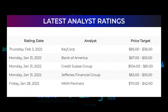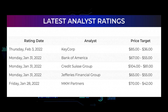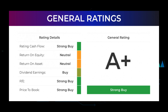Analyst ratings and price targets: On Thursday February 3rd, 2022, KeyCorp set target from $85 to $36. On Monday January 31st, 2022, Bank of America set target from $67 to $55. Credit Suisse Group set target from $104 to $81. Jefferies Financial Group set target from $65 to $55. On Friday January 28th, 2022, MKM Partners set target from $70 to $42. From analysts, Snap stock received a general strong buy rating. Analysts give P/E ratio a strong buy and price to book a strong buy rating, while for return on investment analysts give Snap a neutral rating.